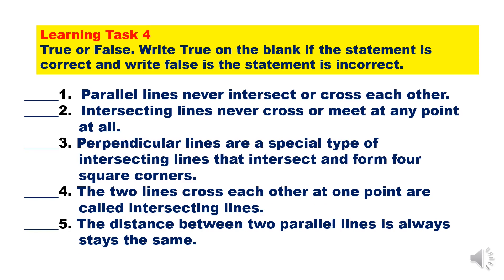Number 1 — parallel lines never intersect or cross each other. Number 2 — intersecting lines never cross or meet at any point at all. Then try to answer numbers 3, 4, and 5. Number 3 — perpendicular lines are a special type of intersecting lines that intersect and form 4 square corners. Number 4 — two lines that cross each other at one point are called intersecting lines. Number 5 — the distance between two parallel lines always stays the same.